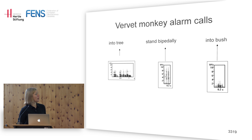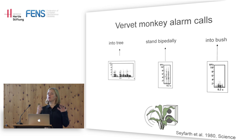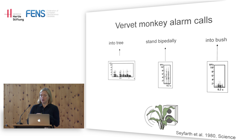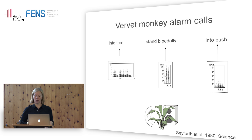And the animals picked the right strategy. When they heard a leopard alarm call, the majority went up into a tree. When they heard a chatter, they stood bipedally, and for the aerial alarm call, they scanned the sky or went into a bush. It's not a huge sample size, and there is much more variation than textbooks suggest — it's about half the animals that go up into a tree, with a third doing something different. But on average, the system works like this.